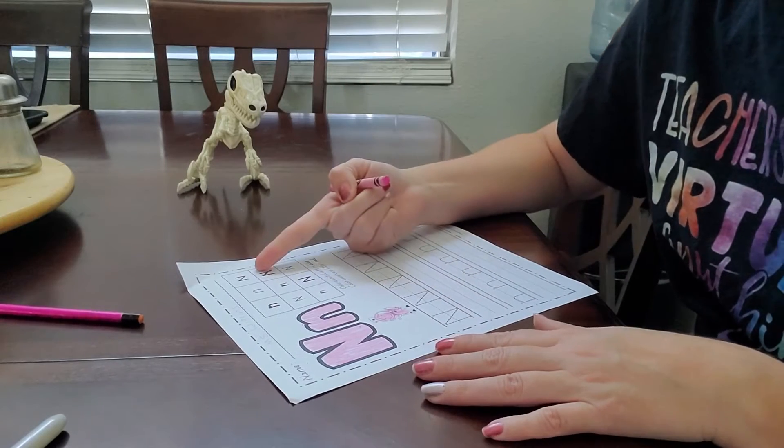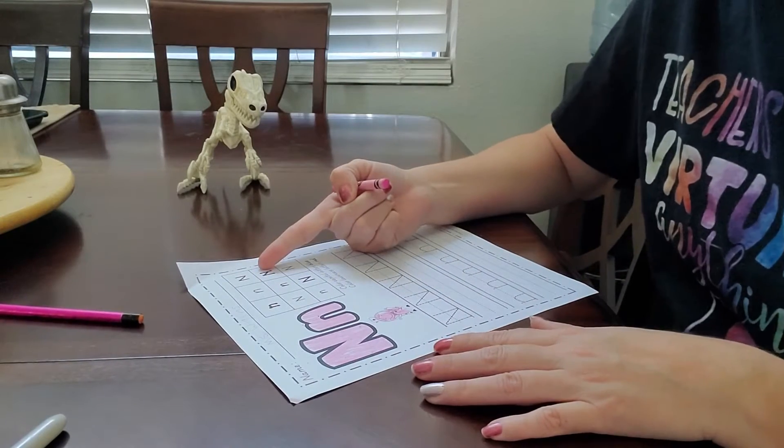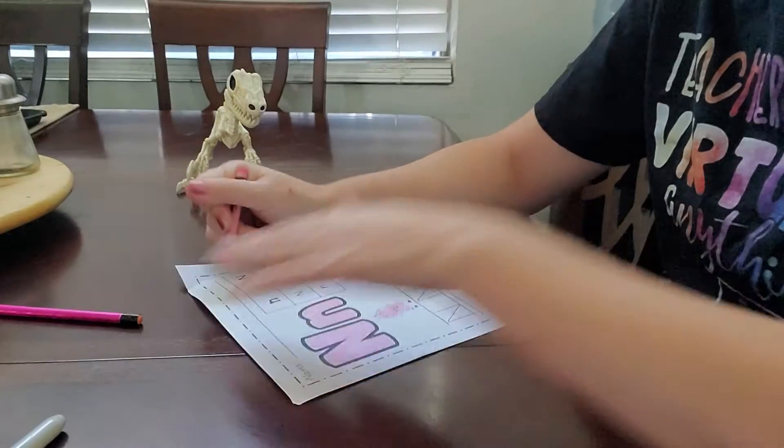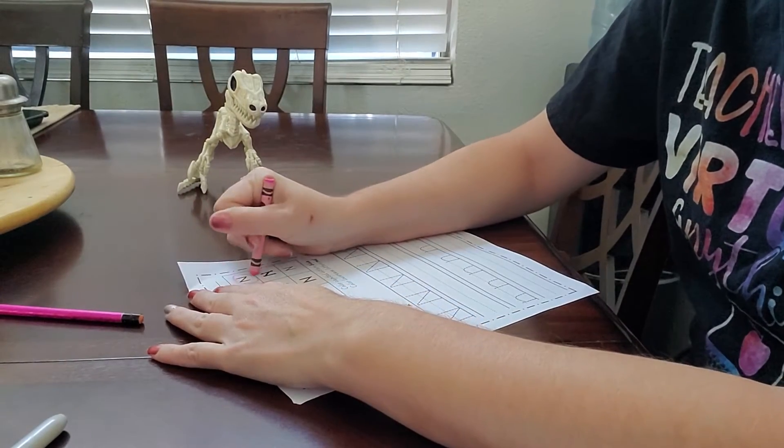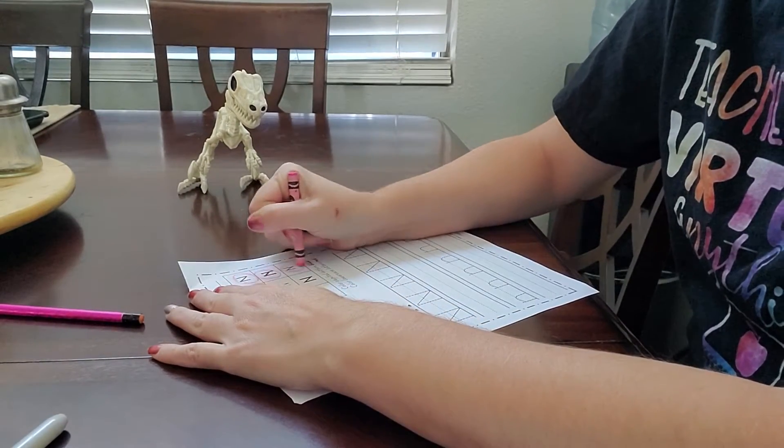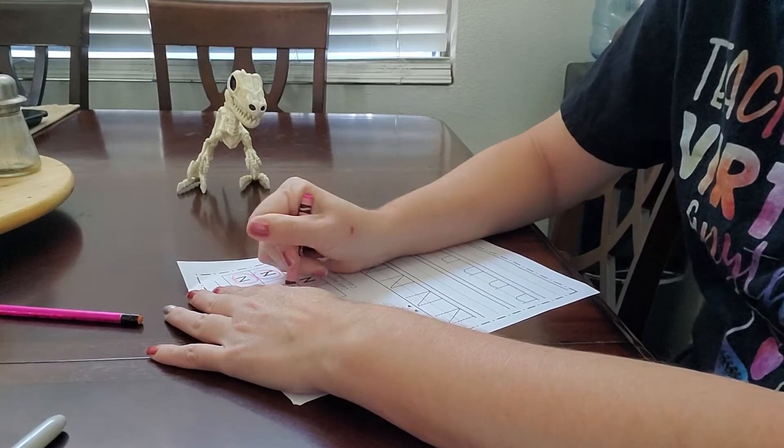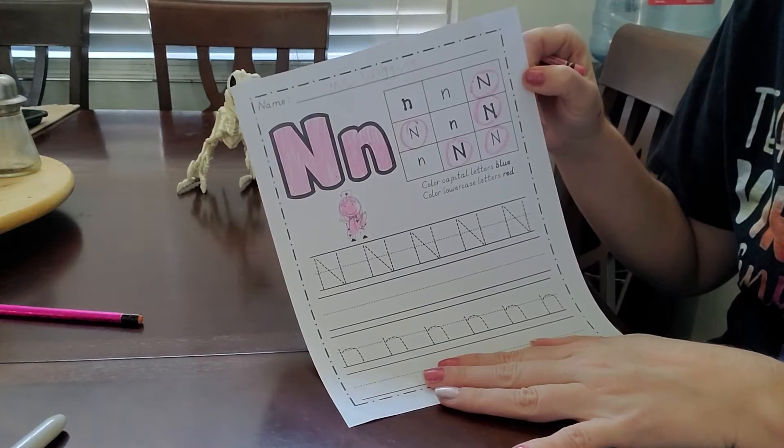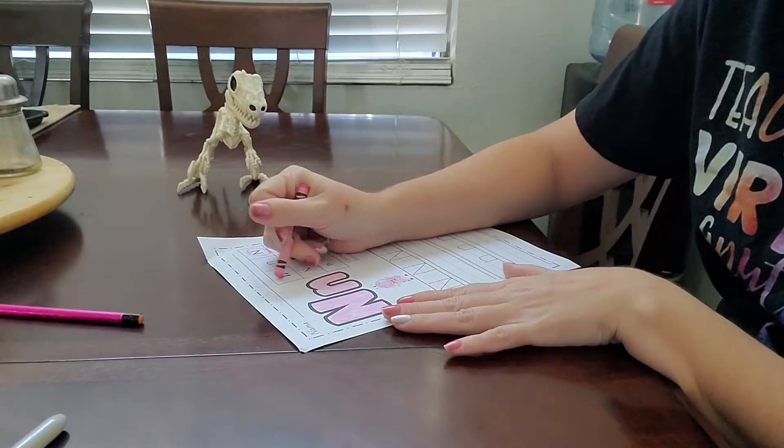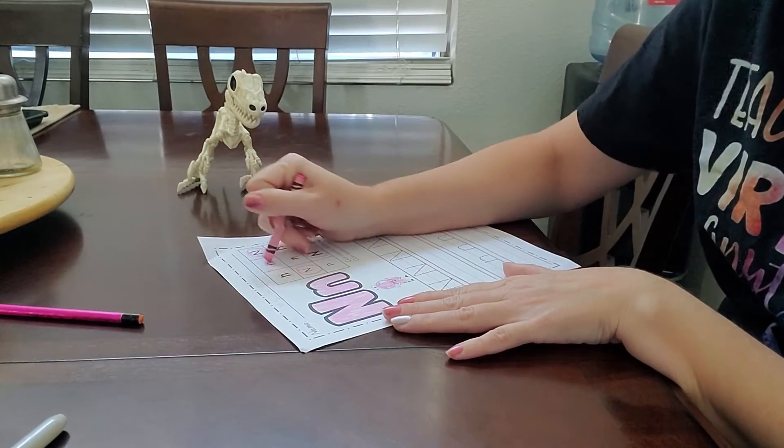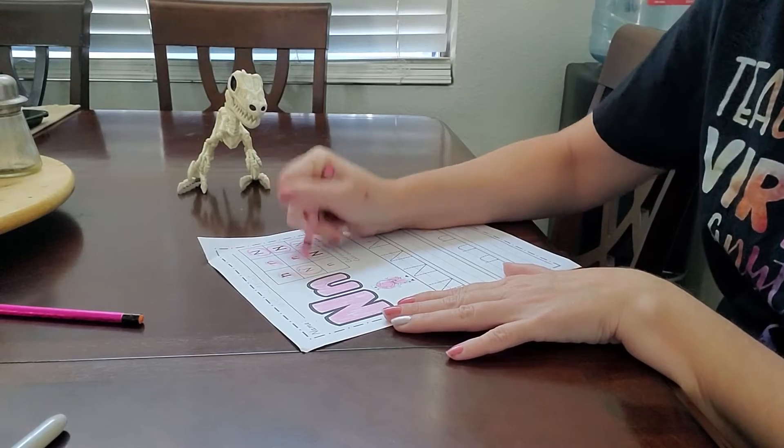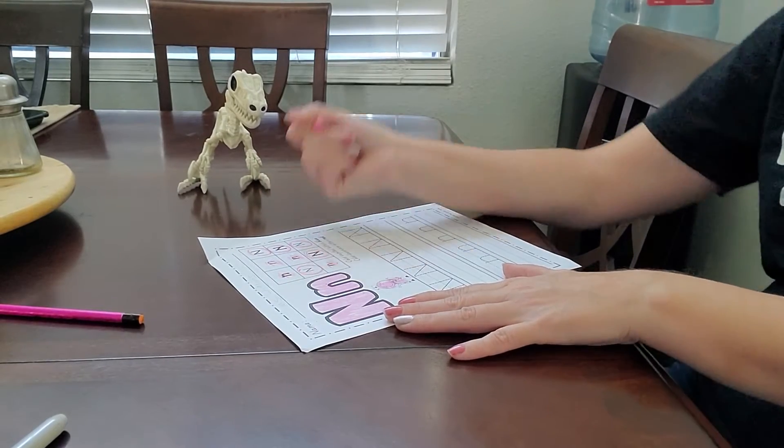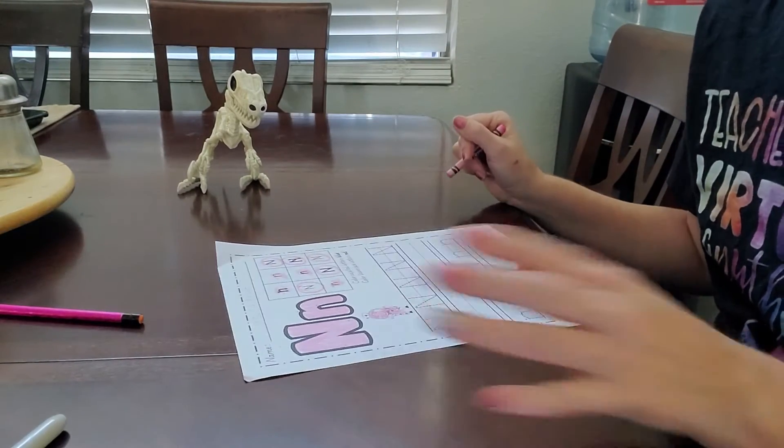And then we're going to circle the uppercase Ns. So go ahead and do that. Circle them. The big ones you're going to circle. And the lowercase Ns, we're going to put a scribble through it. So just go ahead and give a little scribble. That just lets me know that you know the difference between uppercase and lowercase N. That's all. All right.